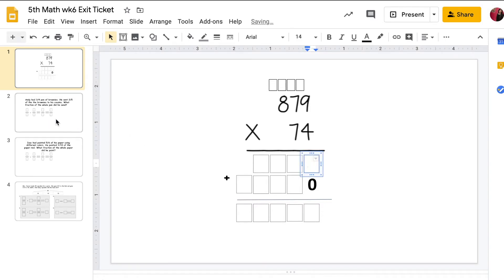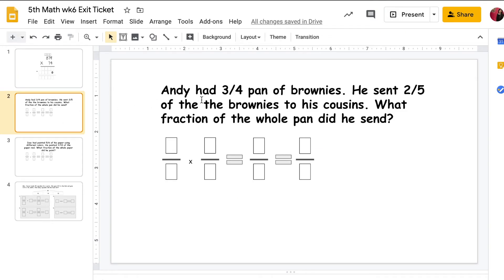So I'm going to move on to slide 2. It says, Andy had three-fourths pan of brownies. He sent two-fifths of the brownies to his cousins. What fraction of the whole pan did he send? So this, similar to the multiplication problem, you're going to click on the box and put in the number according to the information you have here. Okay? This is the second fraction and it's going to go here. And then you're going to solve it. All right?